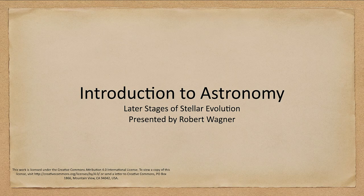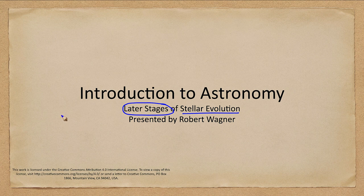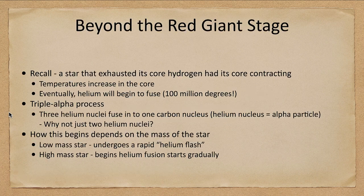Greetings and welcome to the introduction to astronomy. In this lecture we are going to continue talking about stellar evolution, specifically looking at the later stages and what happens at the end of the life of a star like our own Sun. We had been looking at stars in the red giant phase.